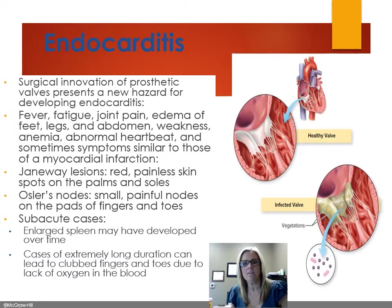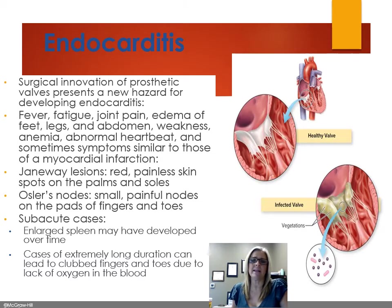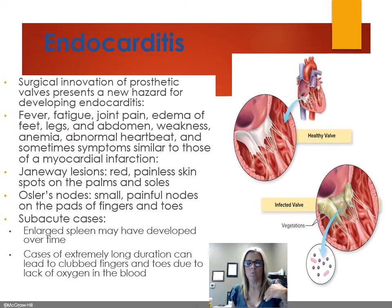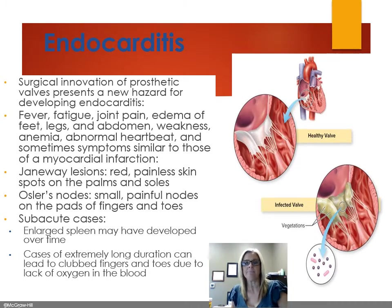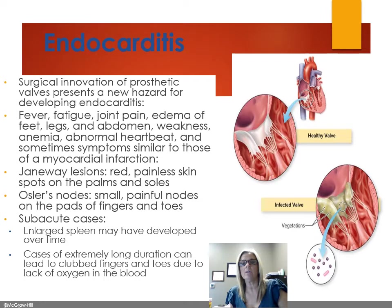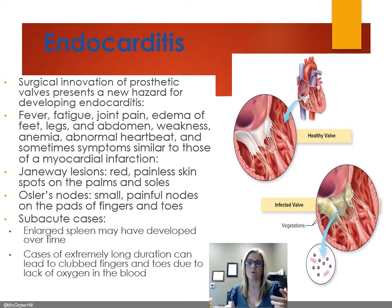We have two variations of endocarditis: acute and subacute. When a prosthetic valve is surgically implanted, bacteria can be introduced during that procedure, which creates a new hazard for developing endocarditis. Those valves serve as a site of infection, bypassing our first line of defense — our skin and tissues. The symptoms are going to be similar for both acute and subacute, though subacute shows slower development and symptoms are not quite as pronounced.